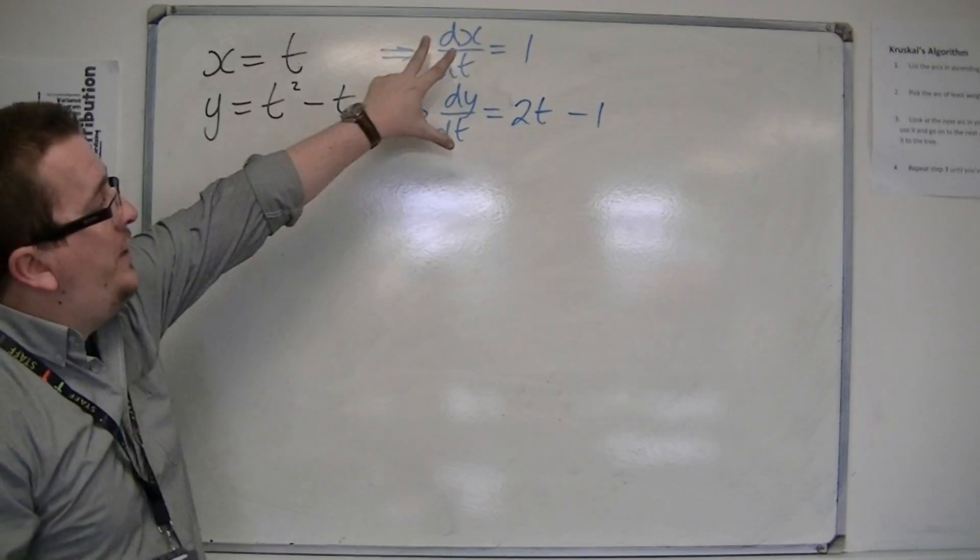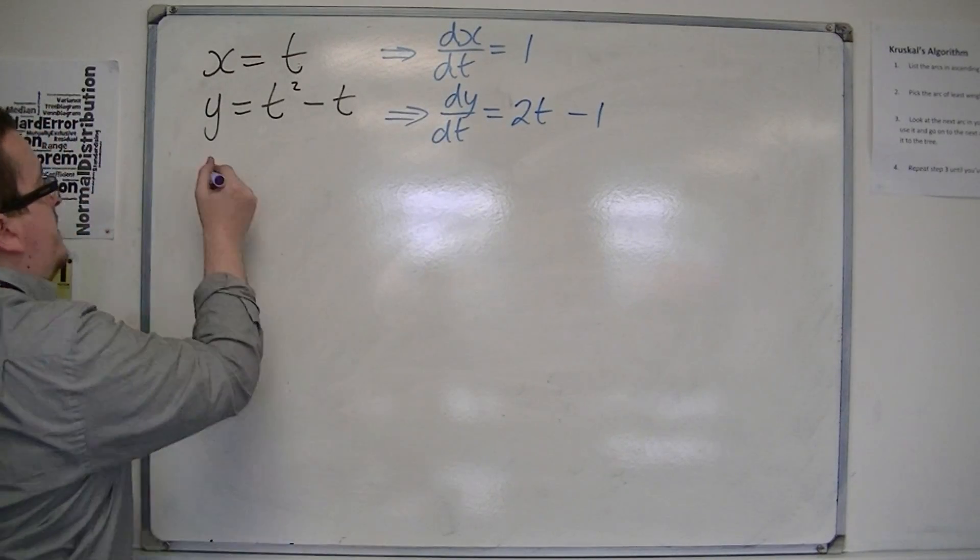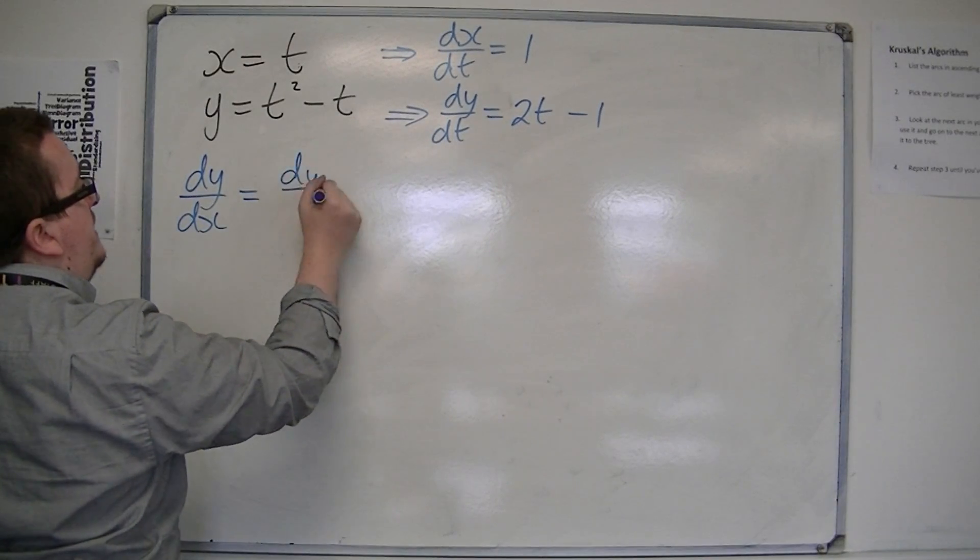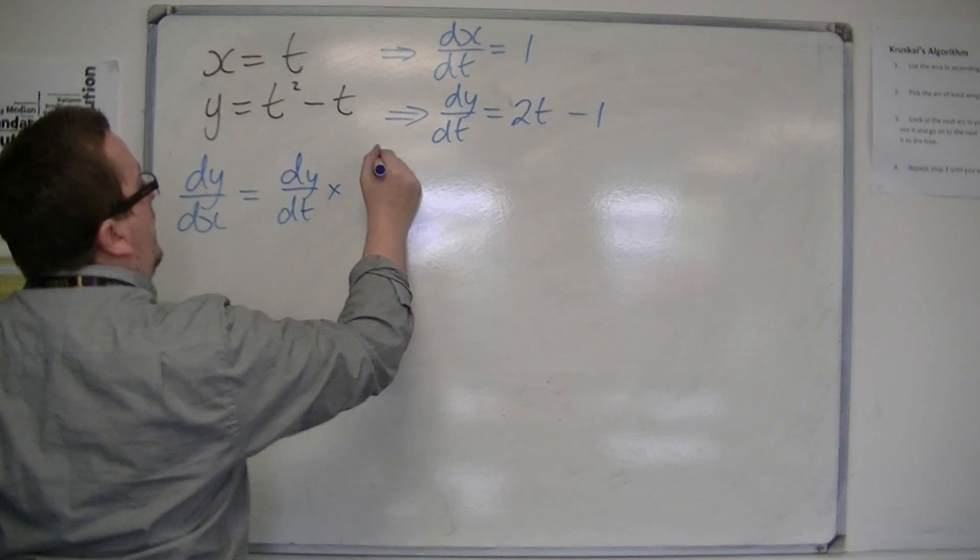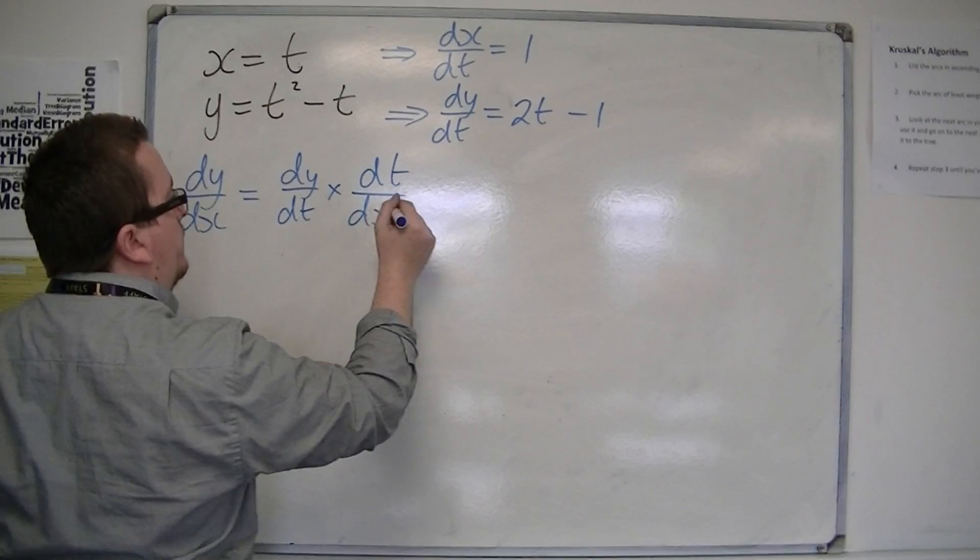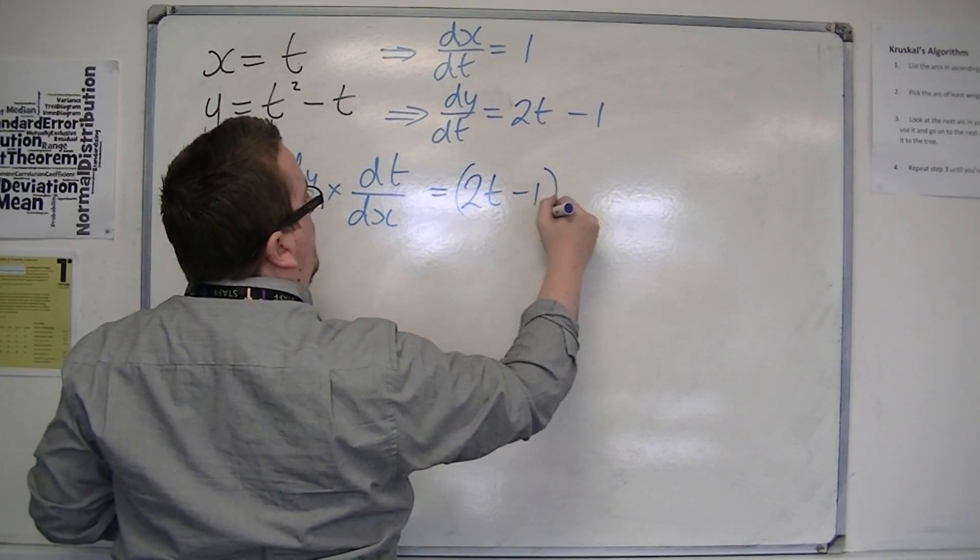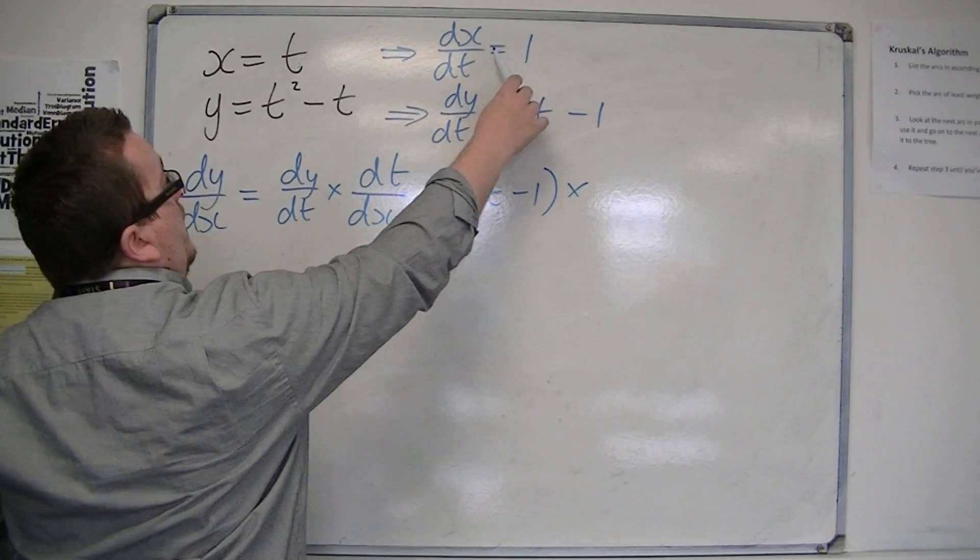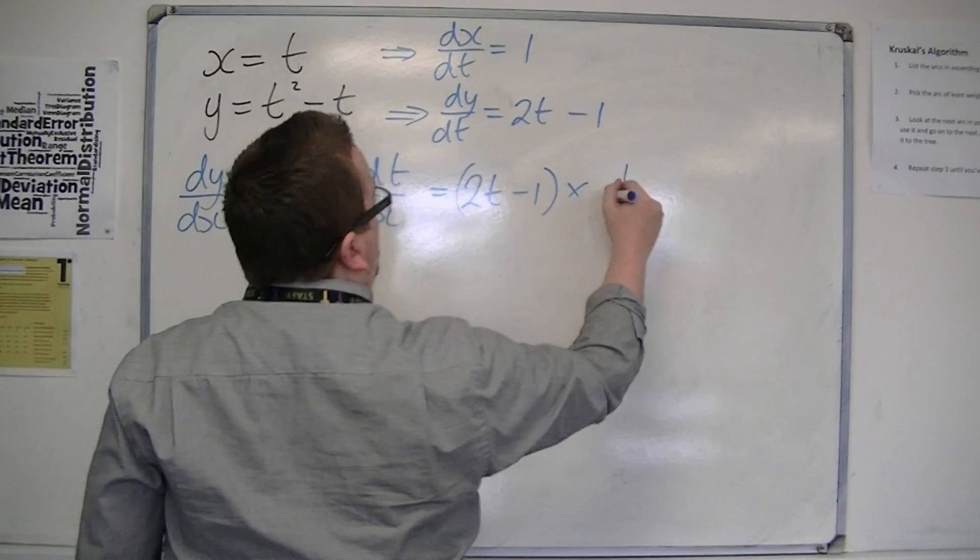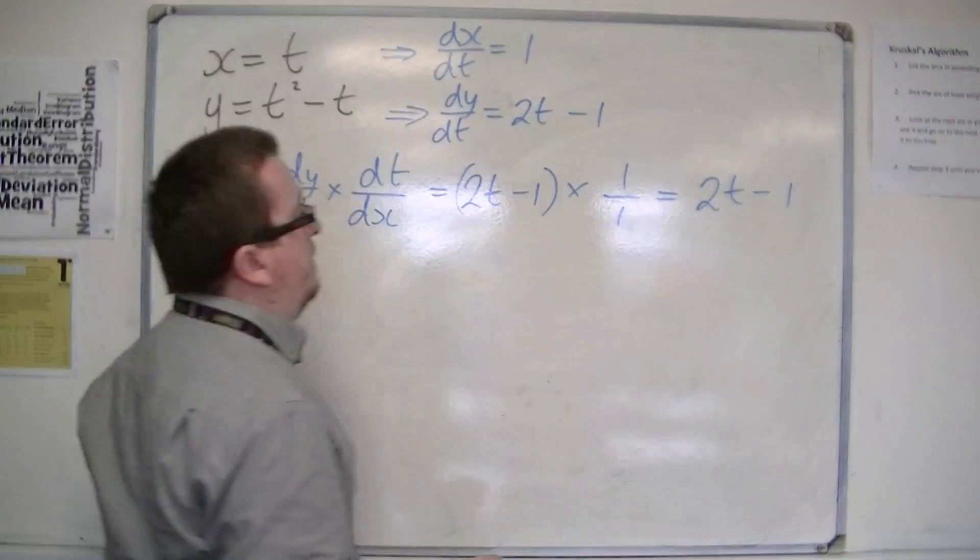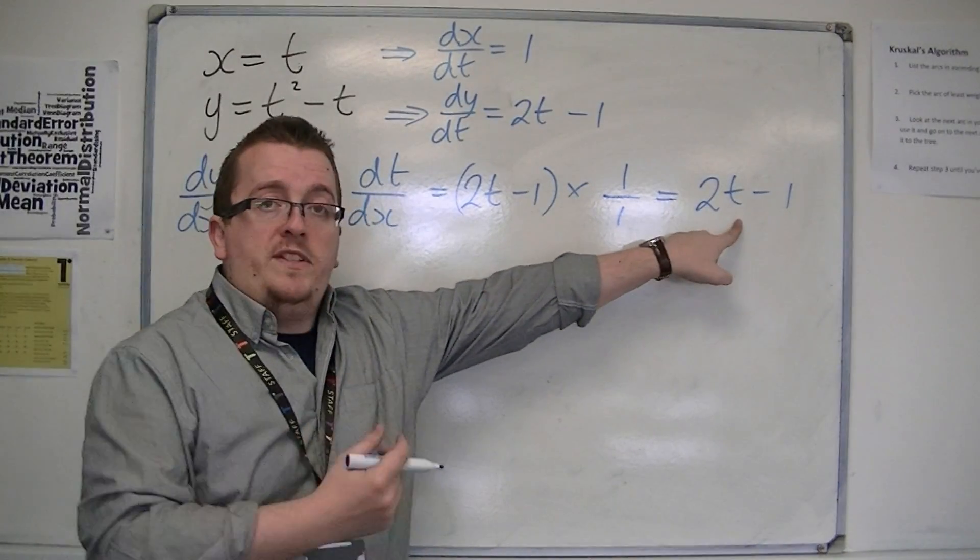So these are the two derivatives I need to find dy/dx. dy/dx is dy/dt multiplied by dt/dx. dy/dt is 2t minus 1, and I'm multiplying that by 1 over dx/dt, which is 1 over 1, which is just 1. So I get 2t minus 1. This is the derivative.